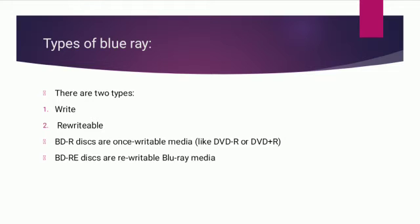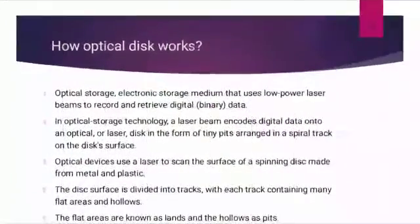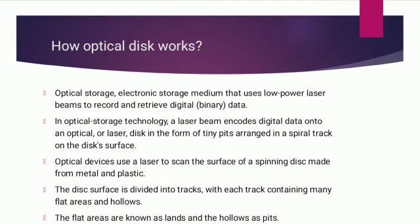There are two types of Blu-ray: writable and rewritable. Writable is a write-once medium (BD-R, DVD+R); rewritable media can be written multiple times. Optical storage is an electronic storage medium that uses a laser beam to record and read digital binary data. A laser beam encodes digital data onto an optical disc in the form of tiny pits arranged in a spiral track on the disc surface.